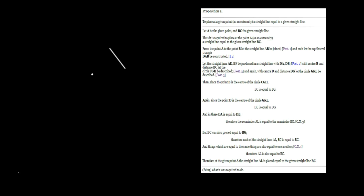Let's now have a look at Proposition 2. What are we trying to do here? To place at a given point as an extremity a straight line equal to a given straight line. We have a given straight line from here to here. The given point is A and we'll call this line BC. So what we're trying to do essentially is place a line of equal length upon A — basically slide this over to this using only ruler and compass. Let A be the given point and BC the given straight line.